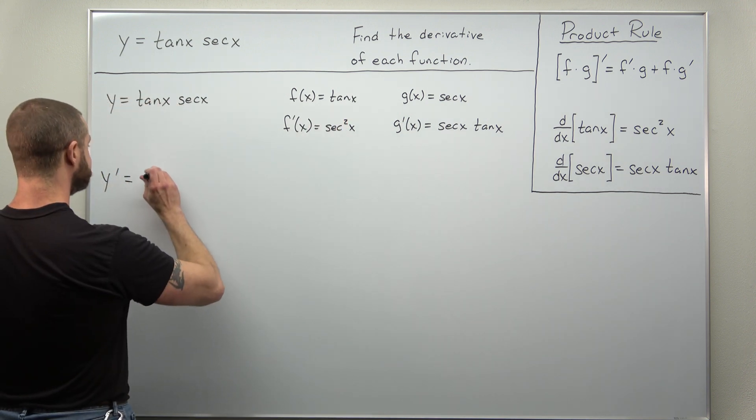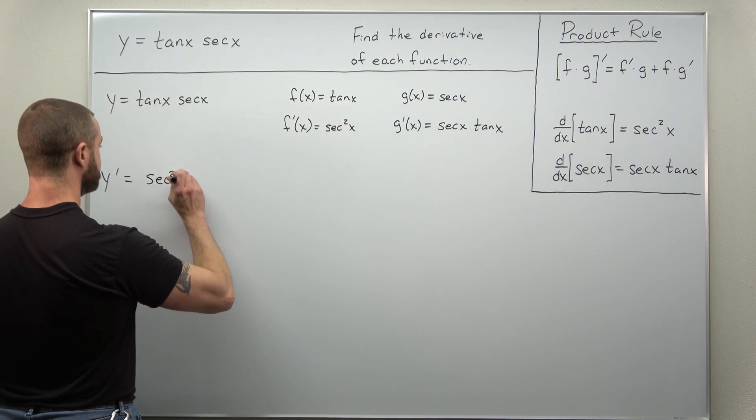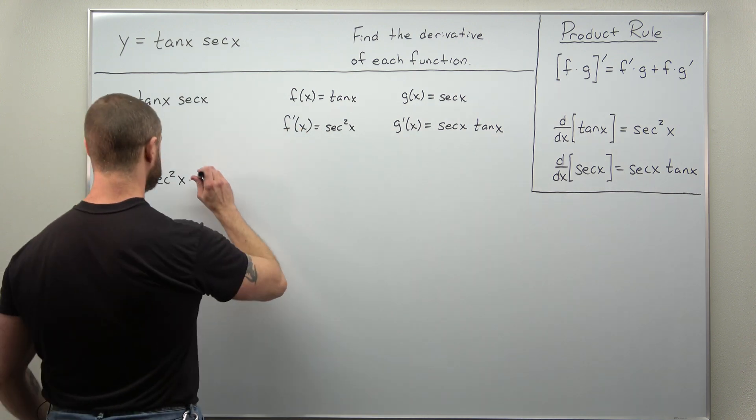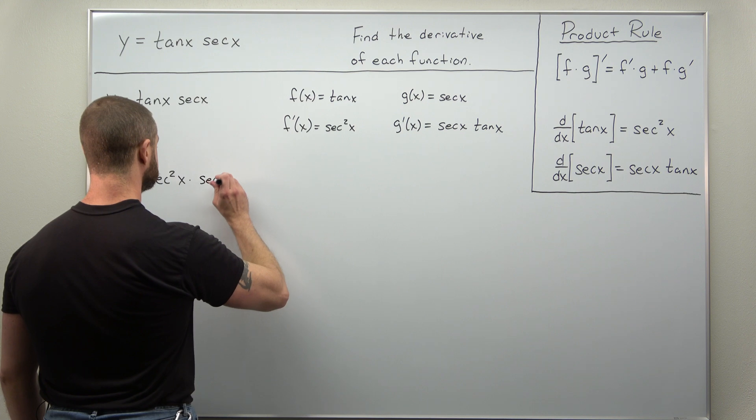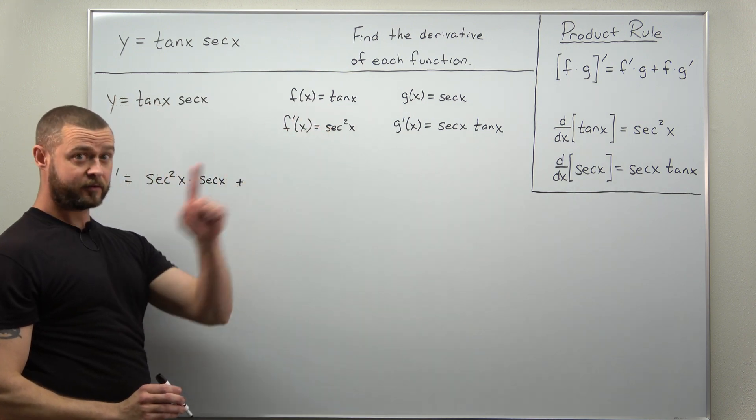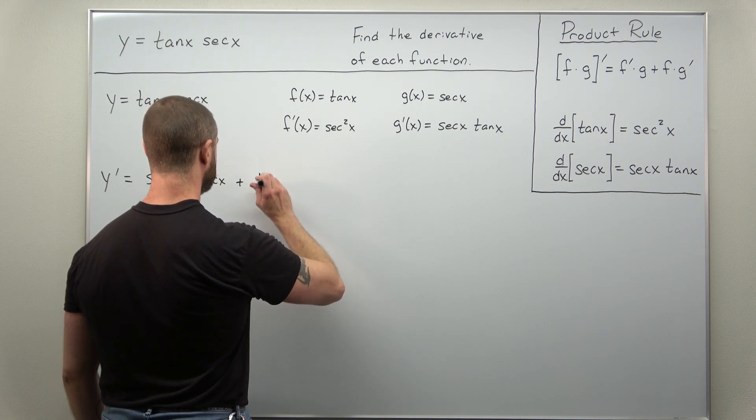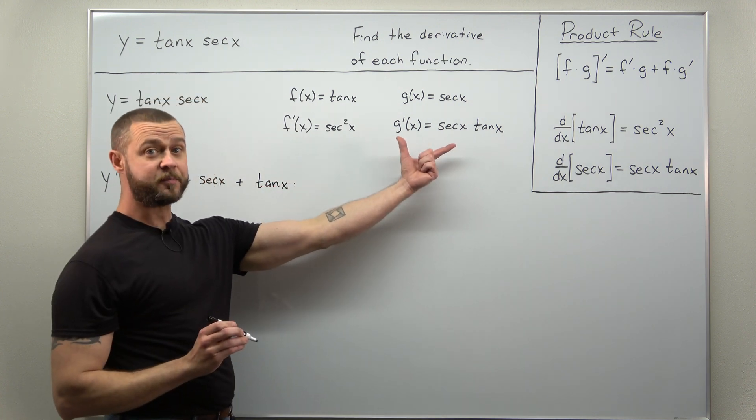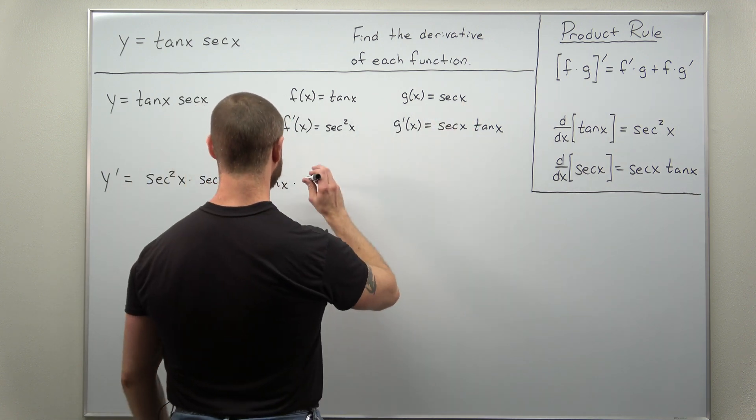F prime is secant squared of x, and that's times g, which is just secant of x, and then we add to that f, which is tangent of x, times g prime, which is secant x tangent x.